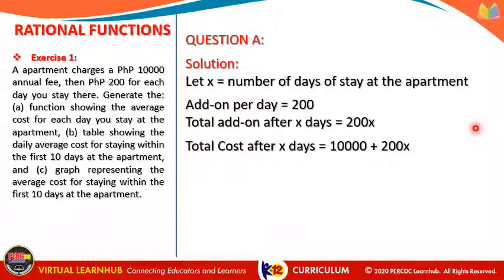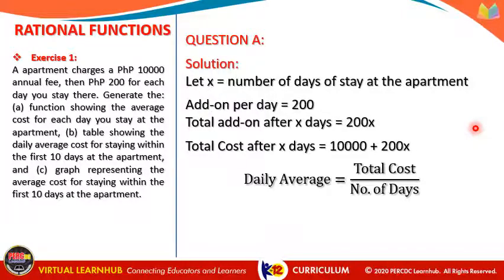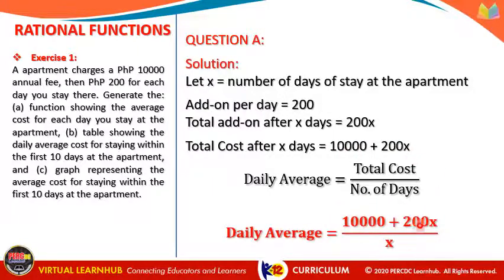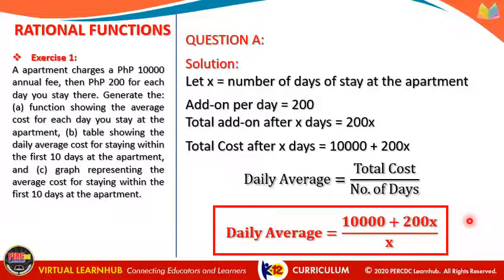So the daily average equals total cost divided by number of days. The total cost is 10,000 plus 200X, which goes in the numerator, and the number of days X goes in the denominator. This is now the function representing the average daily cost for each day you stay at the apartment. We're done with question A.